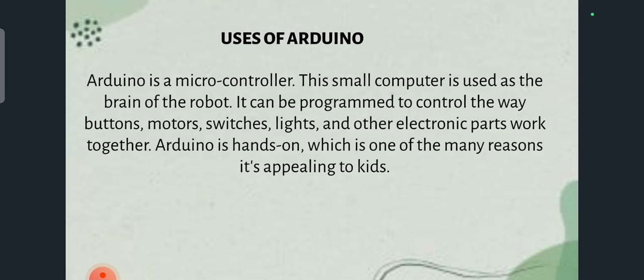The uses of Arduino: Arduino is a microcontroller — a very small computer that is used as the brain of a robot or any major electronic device. It can be programmed to control the way buttons, motors, switches, lights, and other electronic parts work together.